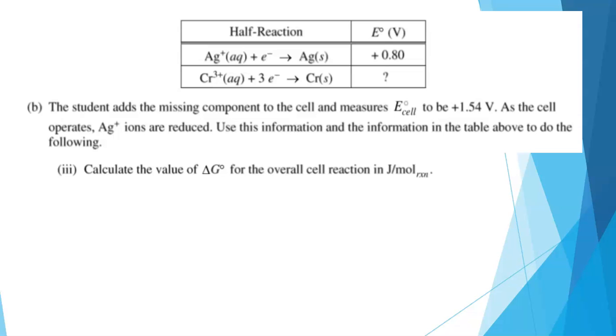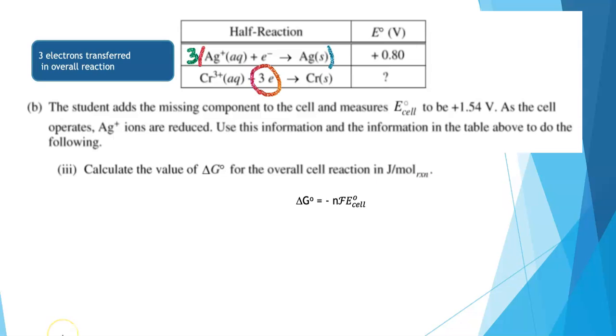Calculate the value of ΔG for the overall reaction in joules per mole. We're going to use the equation ΔG = -nFE_cell. This equation is found on your formula sheet, but it's also really handy and one you should know. If you recall from the previous screen, there were three electrons transferred in the overall reaction. Remember we had to multiply the top half reaction by three. There are three electrons involved in the chromium half reaction. So n = 3.